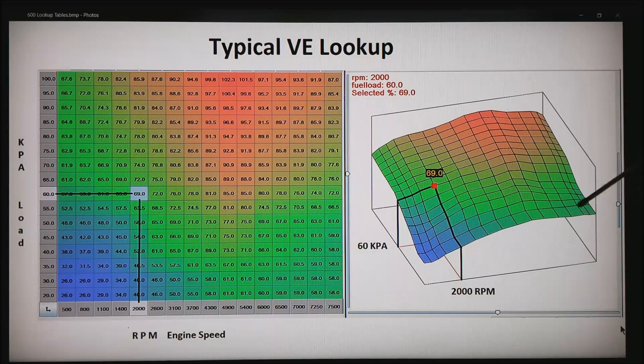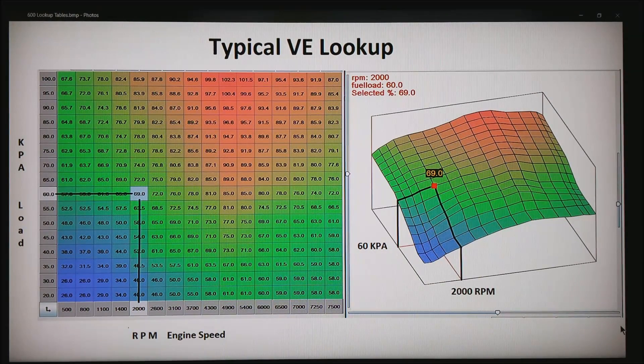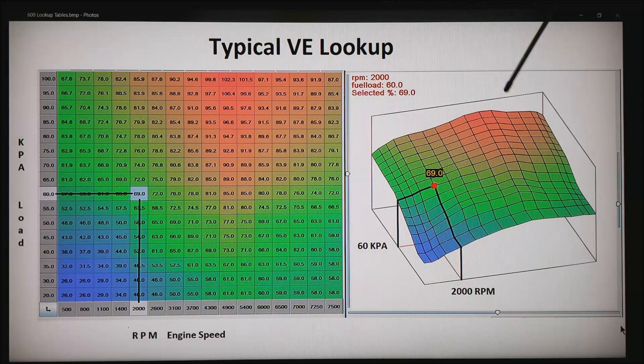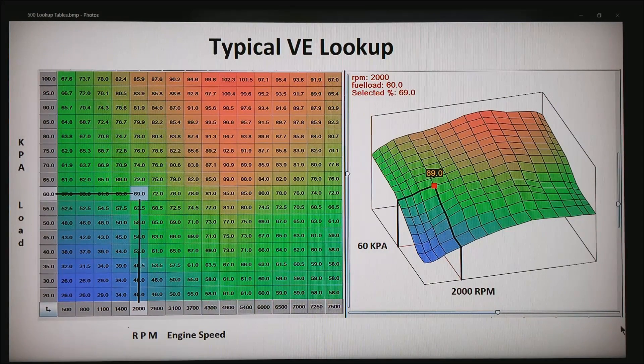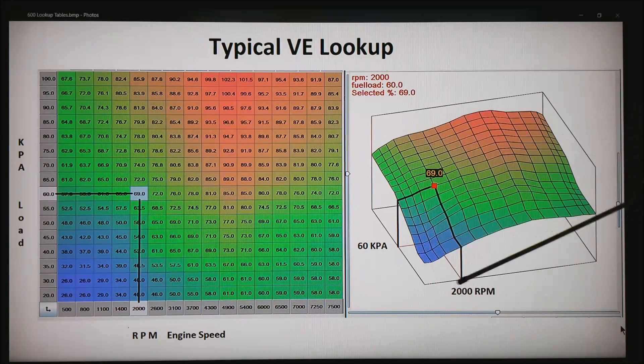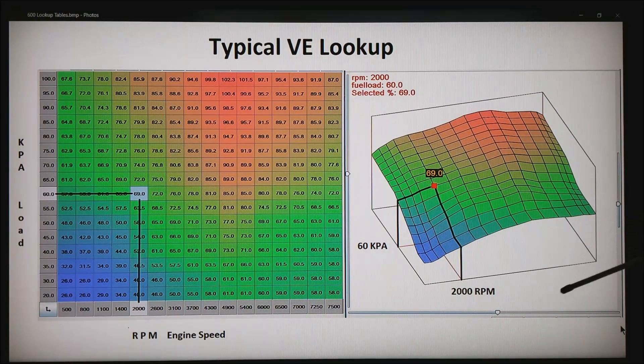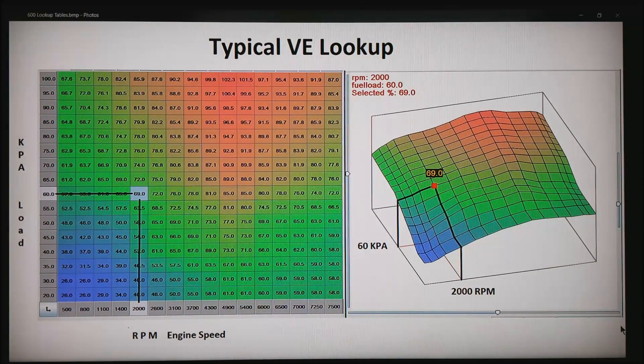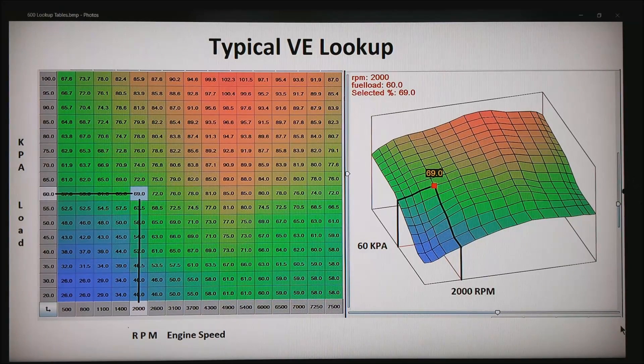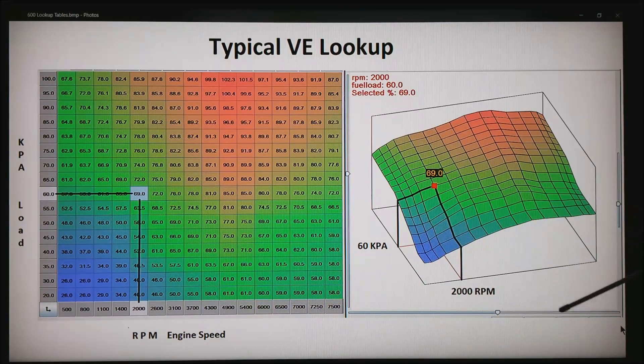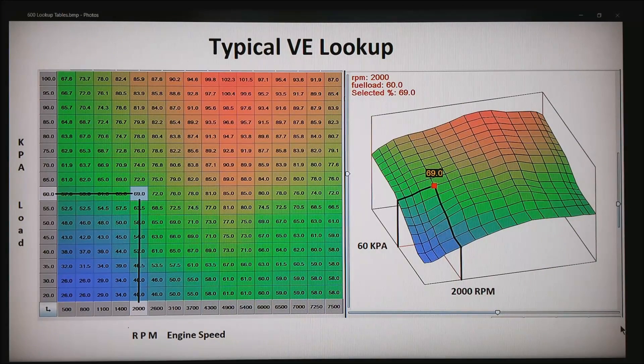On the right side what I have is a three-dimensional view. This is exactly the same table as on the left. The only thing is we've just shown it in a three-dimensional way. Very common on almost all these tuning softwares are sliders where we can zoom in the scale or rotate any direction we want.